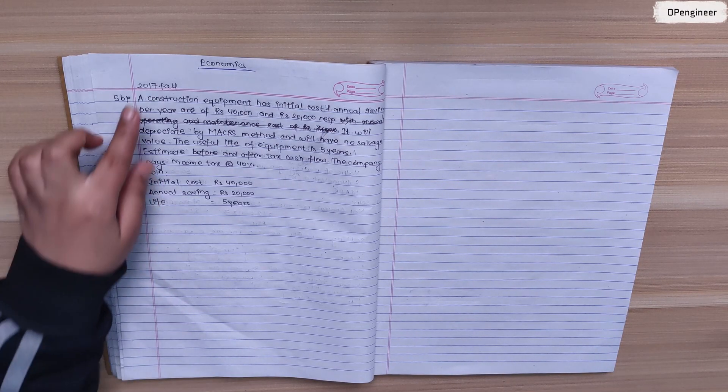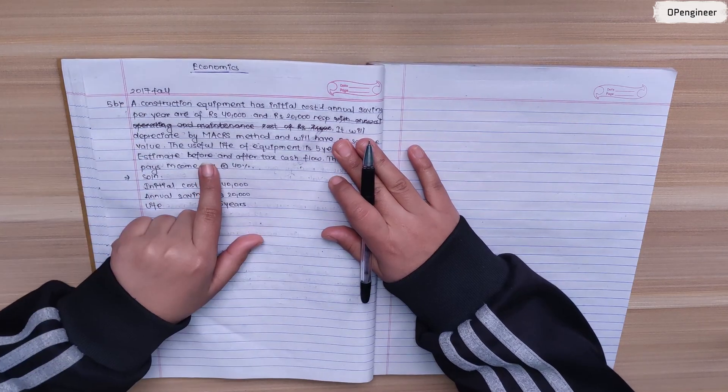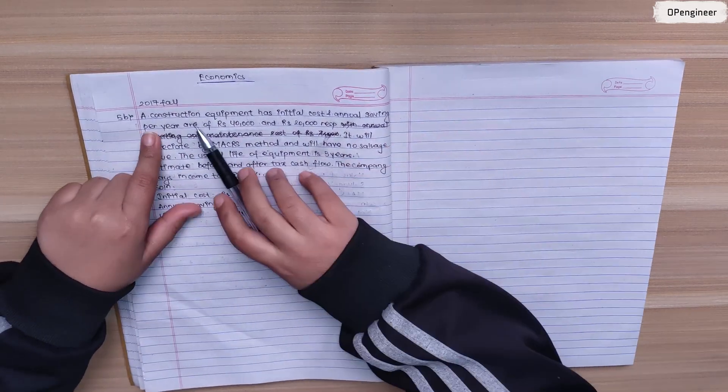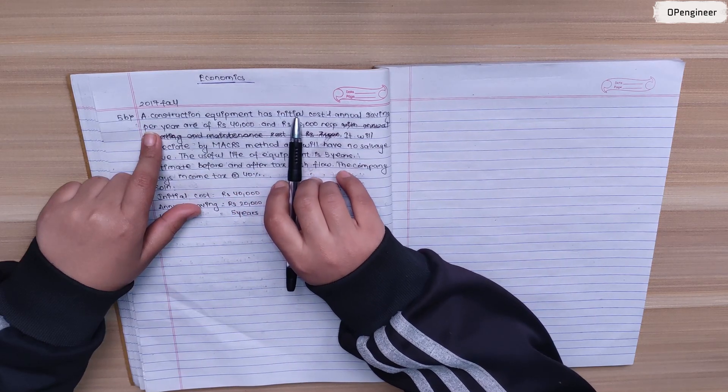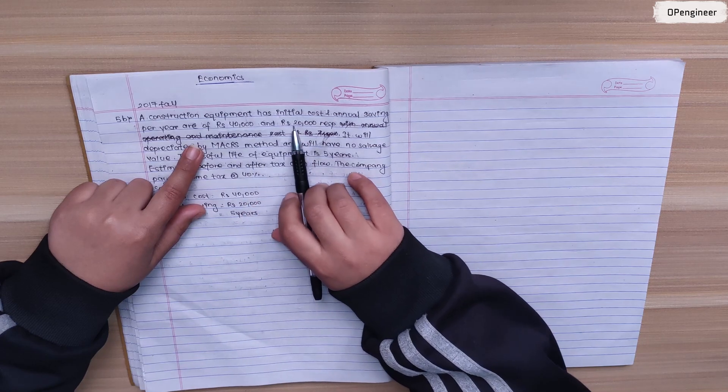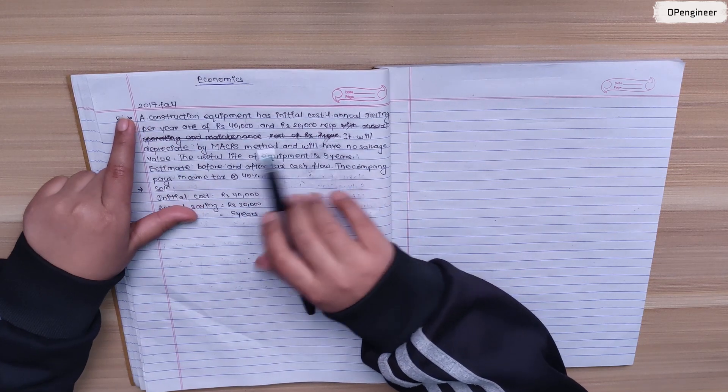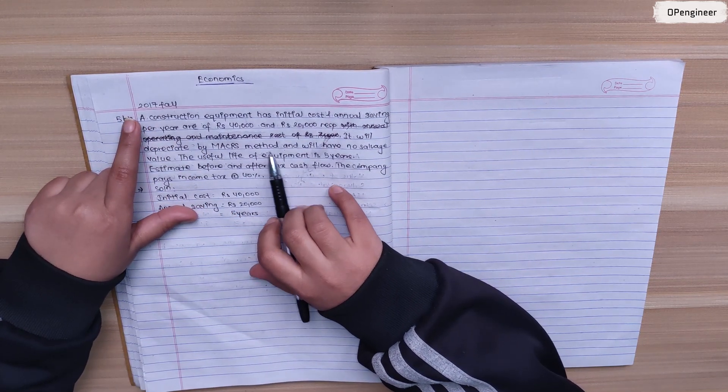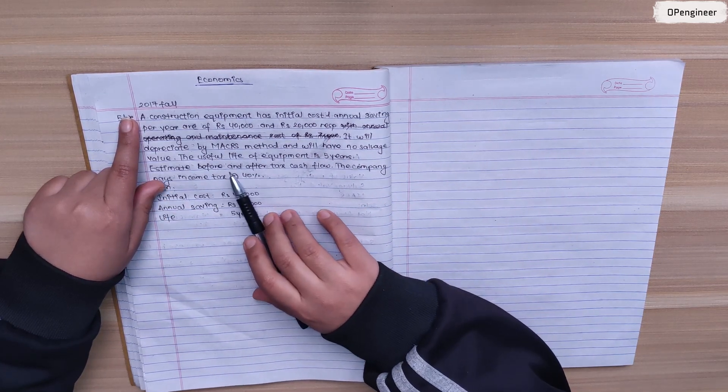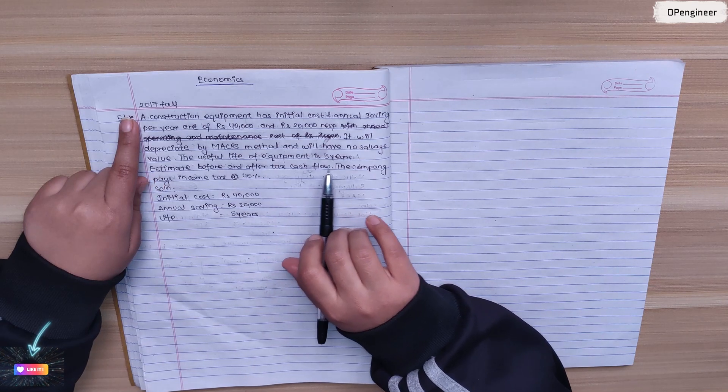This is an engineering economics problem from 2017 about before tax and after tax cash flow. A construction equipment has an initial cost of 40,000 rupees and annual savings of 20,000 rupees per year. It will depreciate by CRS method with no salvage value. The useful life of the equipment is five years. We need to estimate before and after tax cash flow.